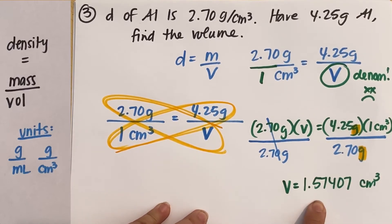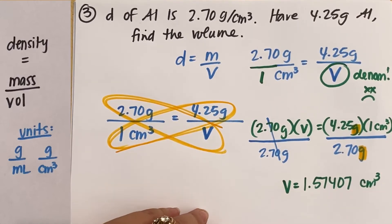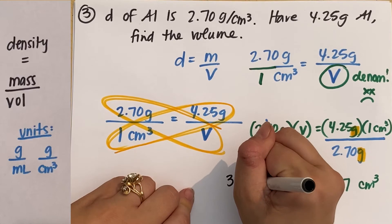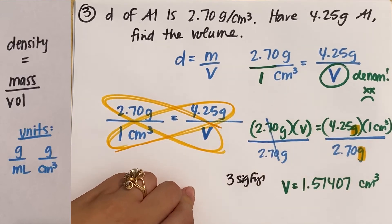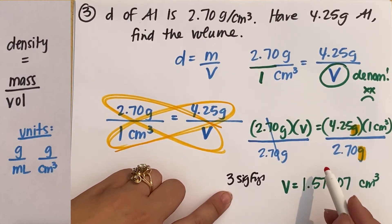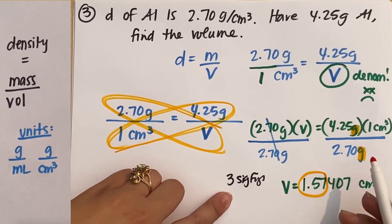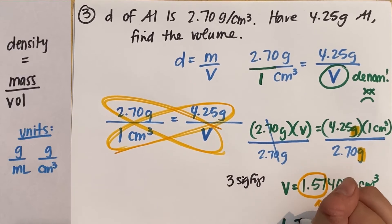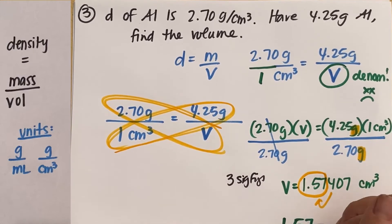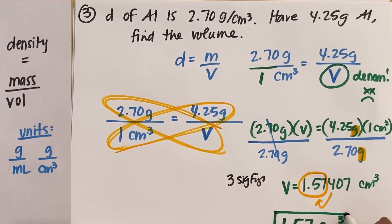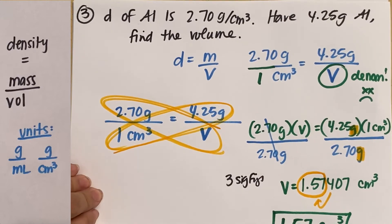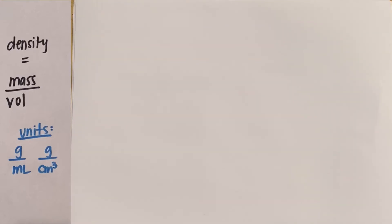But your calculator is stupid and you're much smarter than your calculator. So you know that you can have three sig figs, which means I can have the 1.57. The 4 does not make the 7 round up. So my answer is 1.57 centimeters cubed for my units. And boom, we're done. That was hard or a trickier type question.